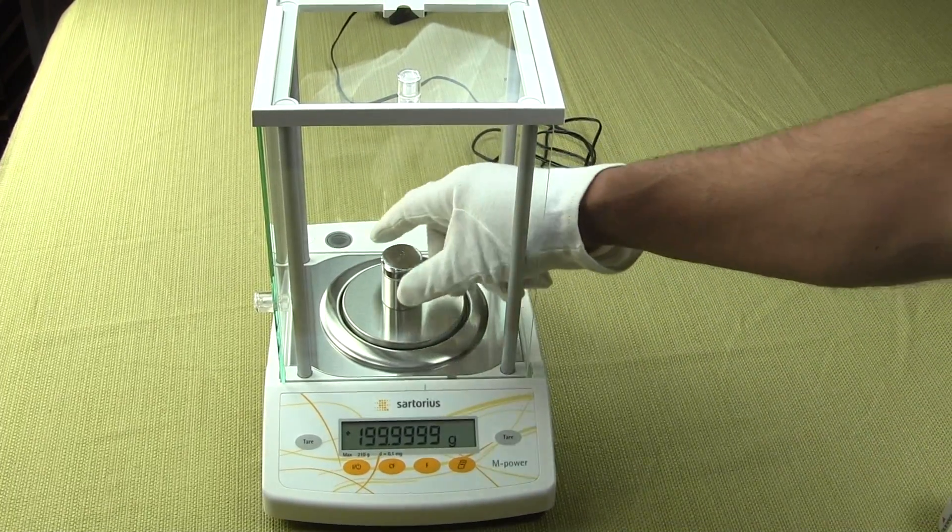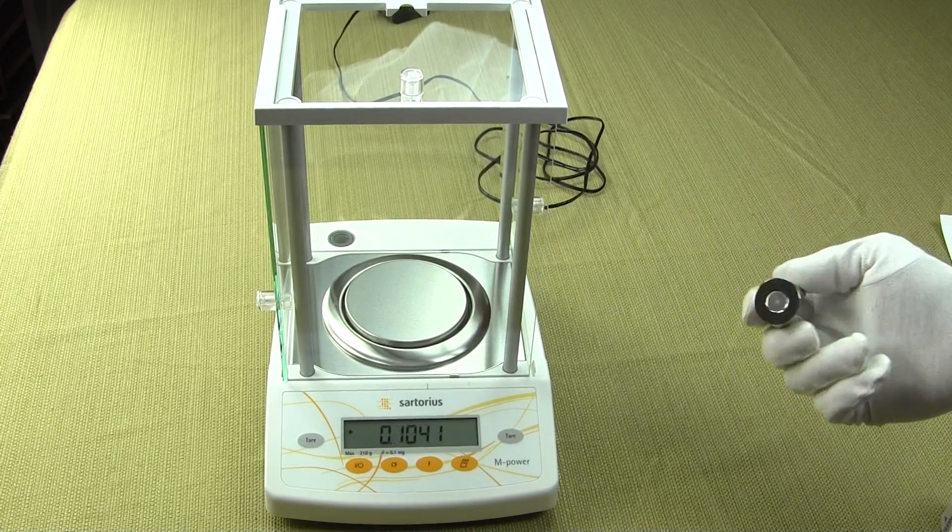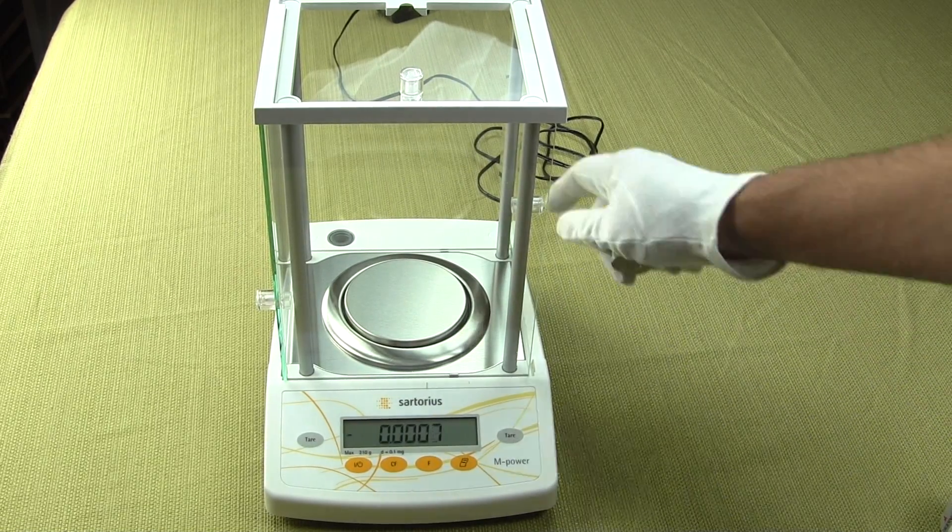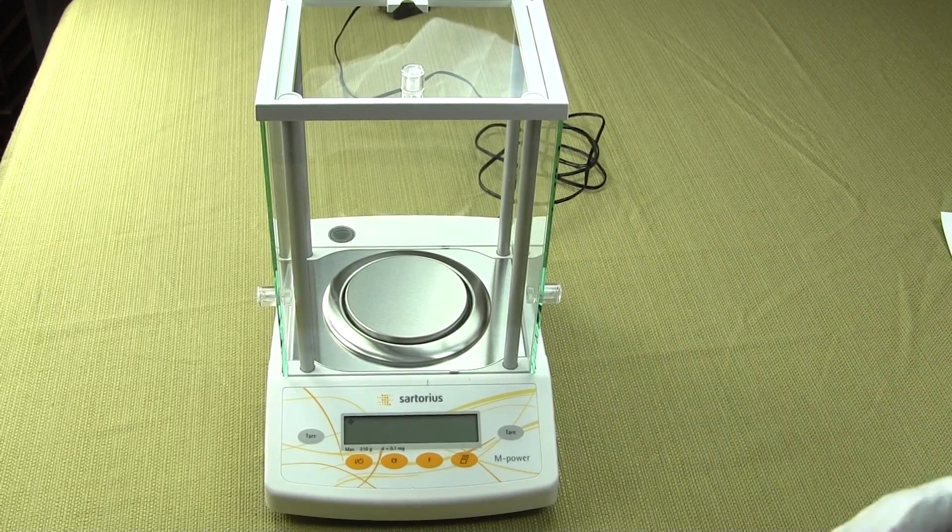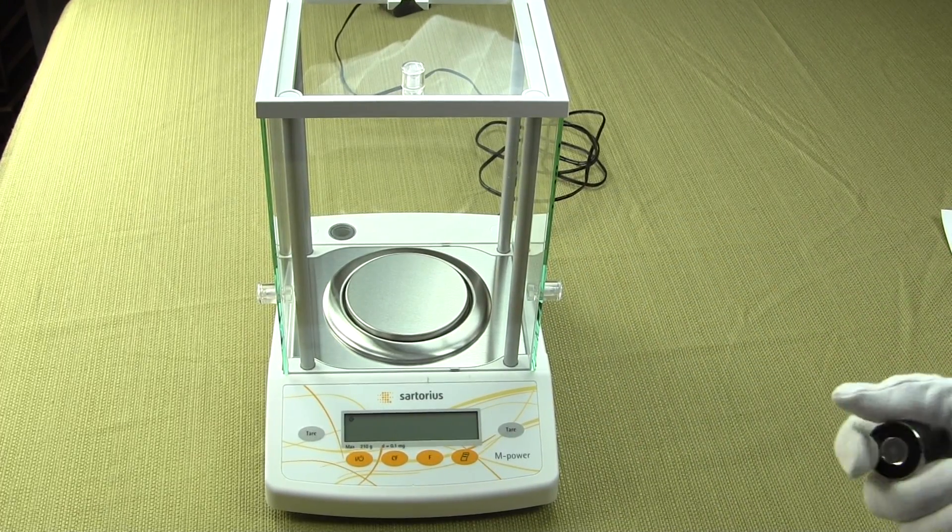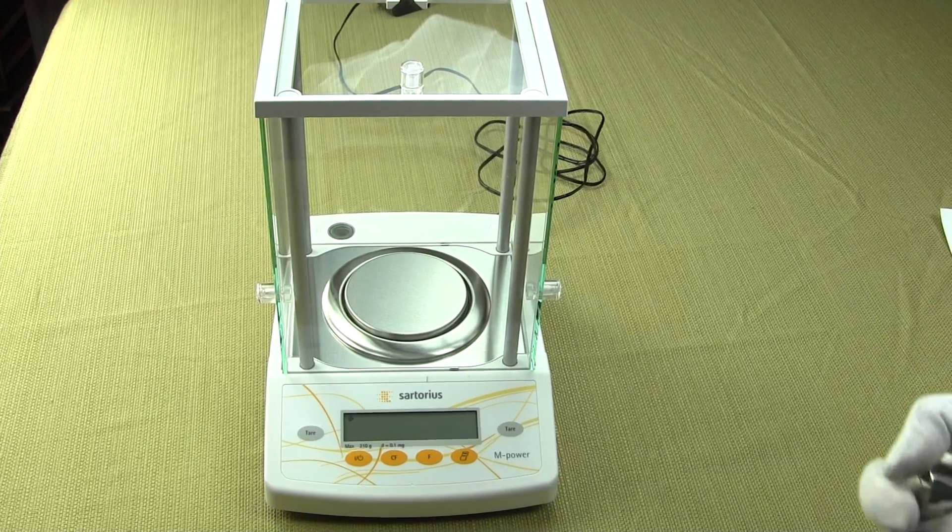You can see we have here a 200 gram class 1 calibration weight. To perform calibration is extremely simple. You first want the balance warmed up for at least 30 minutes, and this balance has been warmed up.